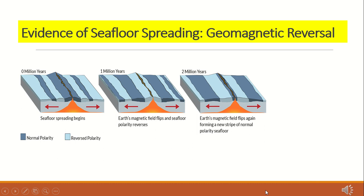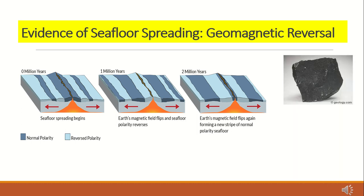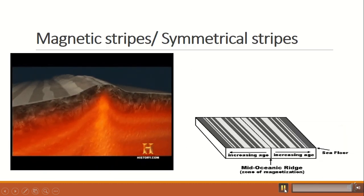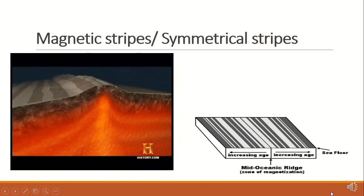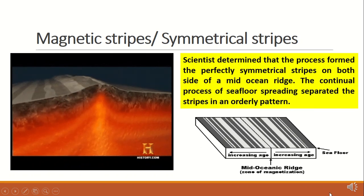Another strong evidence that supports seafloor spreading is geomagnetic reversal. Basalt, the once-molten rock that makes up most new oceanic crust, is a fairly magnetic substance. Scientists began using magnetometers to measure the magnetism of the ocean floor in the 1950s. They discovered that the magnetism of the ocean floor around mid-ocean ridges was divided into matching stripes on either side of the ridge. The specific magnetism of basalt rock is determined by the earth's magnetic field when the magma is cooling. Scientists determined that this process formed perfectly symmetrical stripes on both sides of a mid-ocean ridge, and the continual process of seafloor spreading separated the stripes in an orderly pattern.